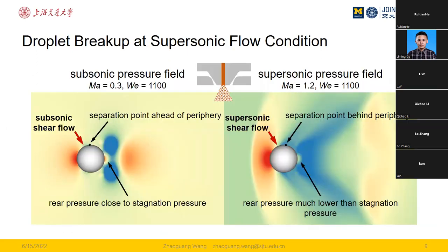Let's start with the first feature: droplet breakup at supersonic flow conditions. Here is the pressure flow field around a droplet at subsonic and supersonic conditions — subsonic on the left, supersonic on the right. These two cases have the same Weber number of 1100 but different Mach numbers. The flow structure is significantly different between them: in the supersonic case, the flow separation point is shifted downstream towards the leeward surface, and the pressure at the back of the droplet is significantly lower.